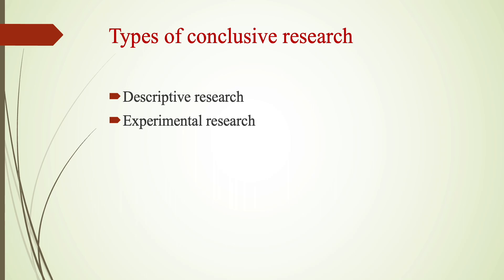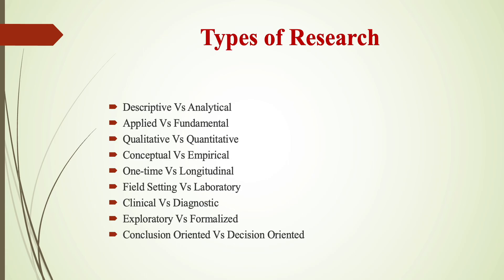To summarize, the types of research are: descriptive vs. analytical, applied vs. fundamental, qualitative vs. quantitative, conceptual vs. empirical, one-time vs. longitudinal, field setting vs. laboratory, clinical vs. diagnostic, exploratory vs. formalized, and conclusion-oriented vs. decision-oriented research. We will discuss types of exploratory research, conclusive research, and modeling research in the next videos. If you like this video, please like, share, and subscribe. Thank you.